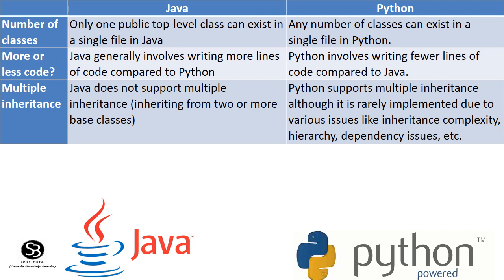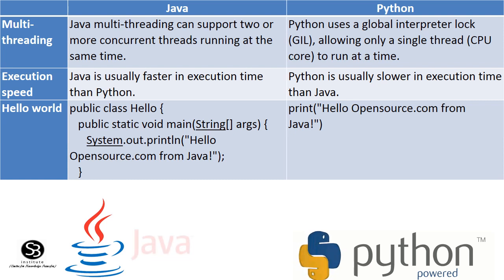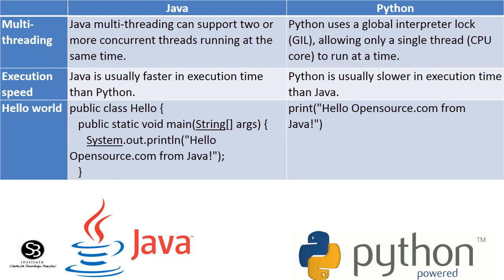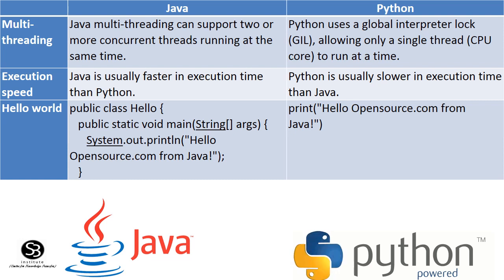Regarding multi-inheritance: Java supports multi-inheritance, and Python also supports multi-inheritance. Regarding multi-threading: Java supports multi-threading where two or more concurrent threads can run at the same time. Python uses the Global Interpreter Lock, so only one single thread runs at runtime. Regarding execution speed: Java is faster than Python.